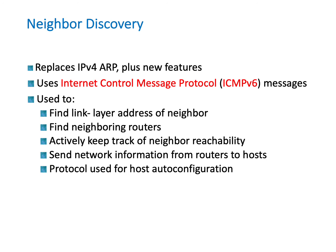What does Neighbor Discovery do? Basically it replaces the IPv4 address resolution protocol, or ARP for short, plus it has some new features. It uses the Internet Control Message Protocol, or ICMPv6, messages to find the link layer address of a neighbor, find neighboring routers, actively keep track of neighbor reachability, send network information from routers to hosts, and it's also a protocol used for host auto configuration.